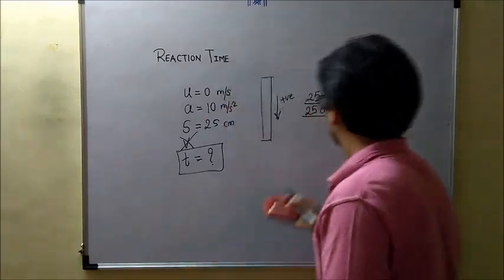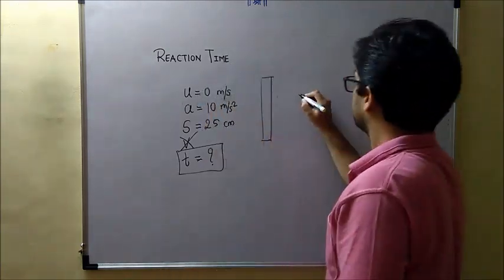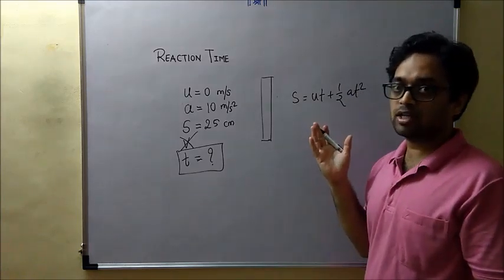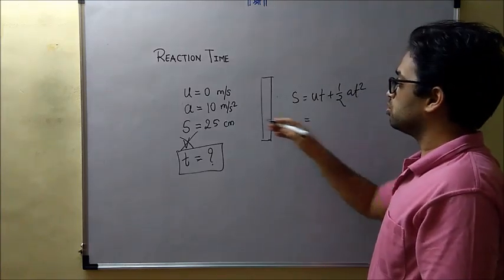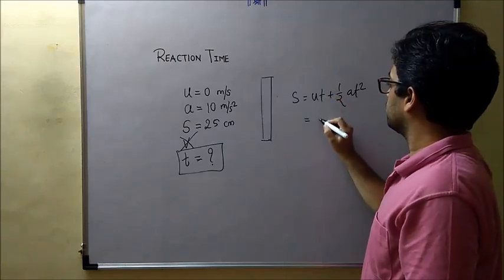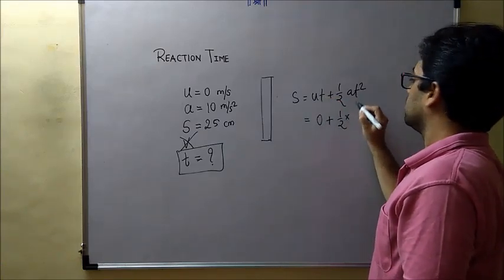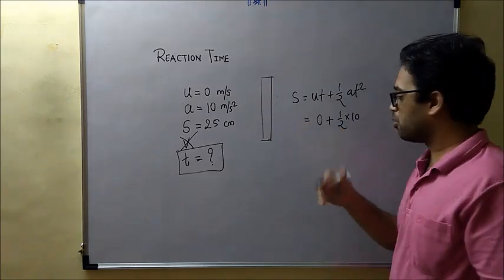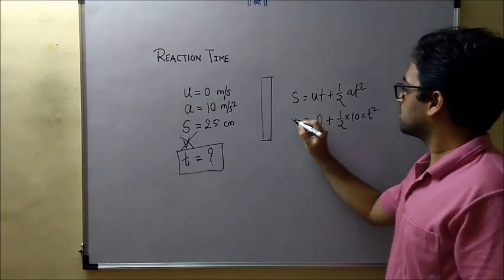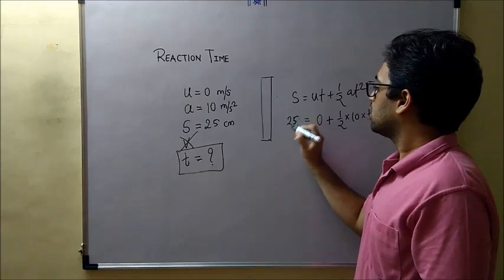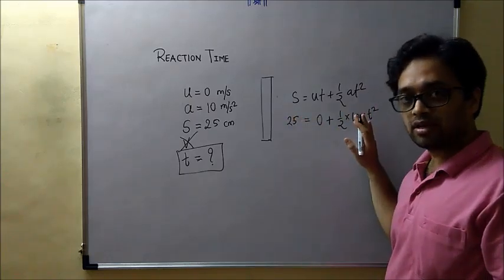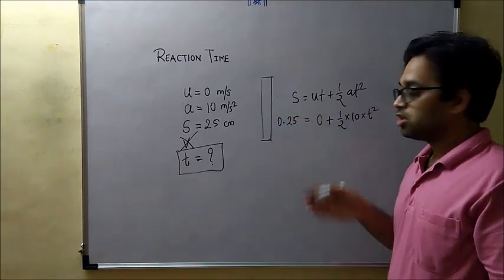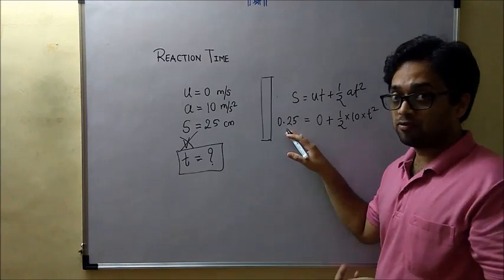Now let me formulate the equation. It is S = ut + ½at². Equation of kinematics, one of the equations of kinematics which you already know. u is 0. So this term will be 0 plus half into acceleration is 10, and I've taken an approximate value. So whatever reaction time you will get that will be approximate, into t². That is equal to S which is 25 centimeters. If I convert it to meters because everything else is in SI units. So let me convert it to meters. It is 0.25 meters. You can refer to your table of power of 10 for doing this conversion.